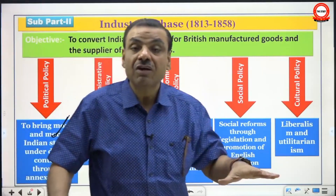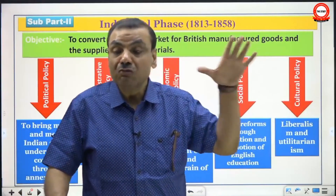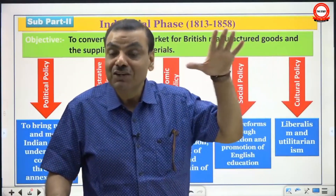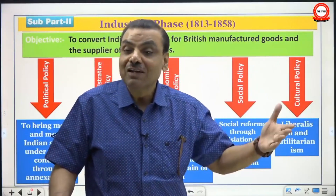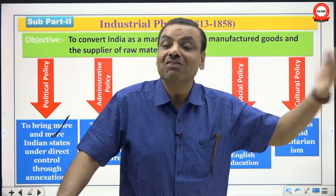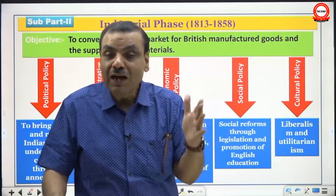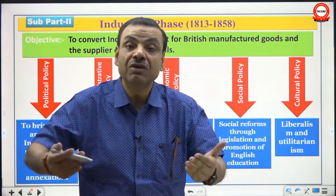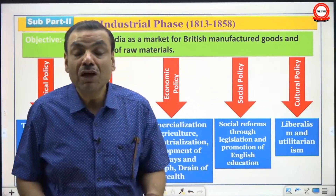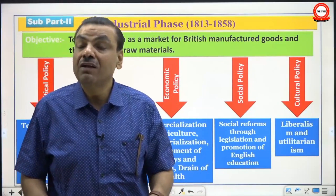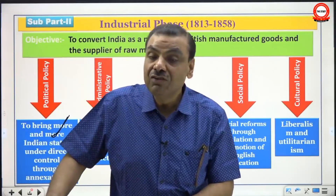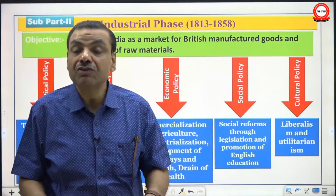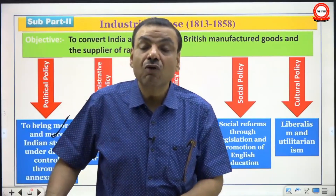It became imperative for the British company to bring more and more Indian estates under direct British control so that British manufactured goods could penetrate Indian markets and Indian raw materials could be extracted. In other words, the Indian market had to absorb British manufactured goods and provide raw materials. This was only possible if more and more regions were under direct control, which is why almost all governor generals from Lord Hastings up to Lord Dalhousie followed a policy of unrestricted expansion.